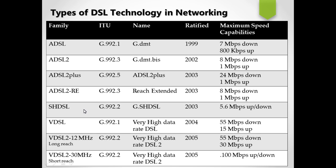SSDSL (2003): 5.6 Mbps both upstream and downstream. VDSL (Very High Data Rate DSL), ratified in 2004: 55 Mbps downstream and 15 Mbps upstream. VDSL2 long reach: 55 Mbps downstream and 30 Mbps upstream. VDSL2 short reach only, released 2005: 100 Mbps downstream.